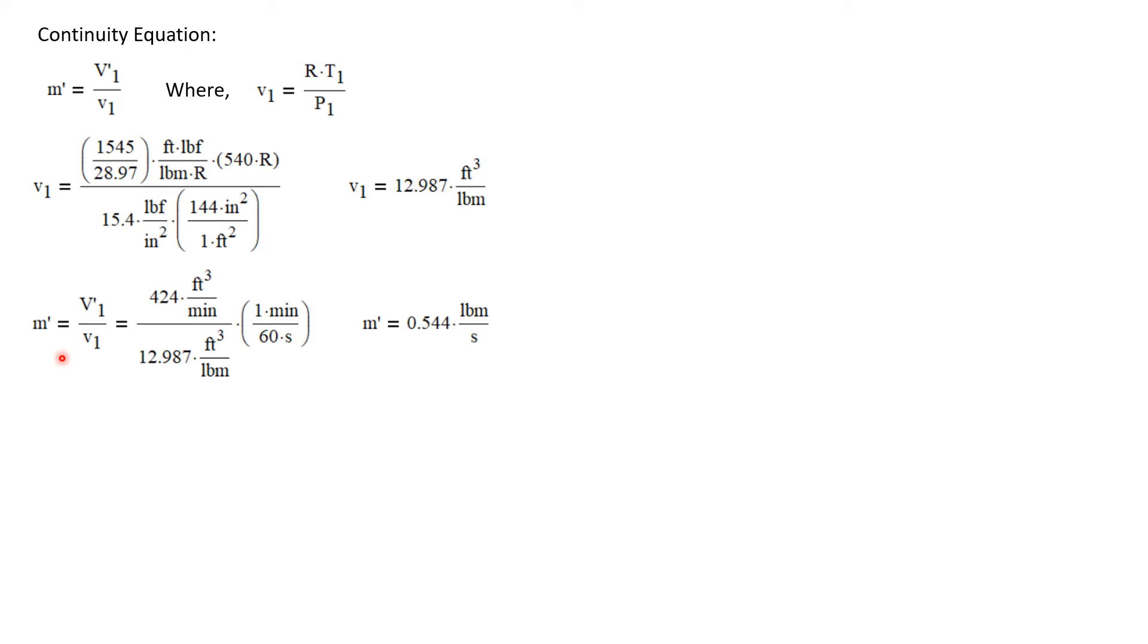So we can now calculate the mass flow rate. It's just the volumetric flow rate, which was given as 424 CFM, divided by the specific volume, which we just calculated. And I'm going to put this in terms of seconds instead of minutes. And so I get a mass flow rate of 0.544 pounds mass per second.